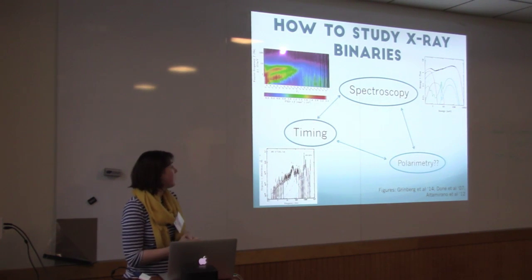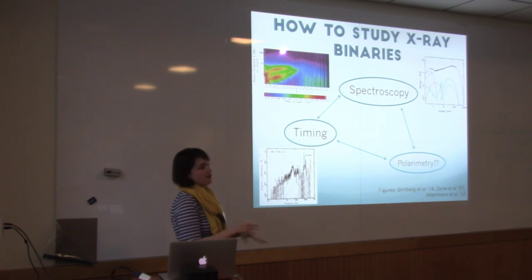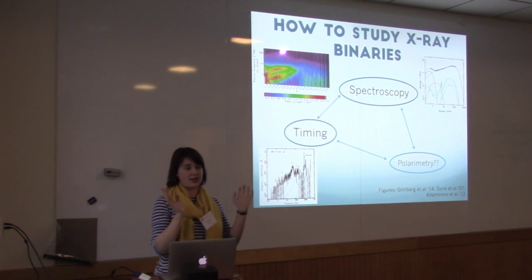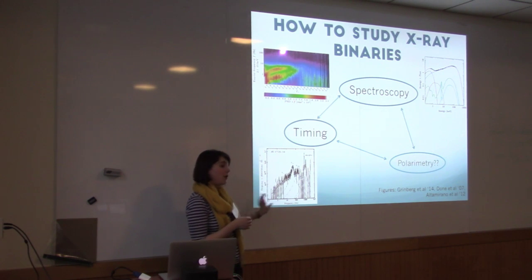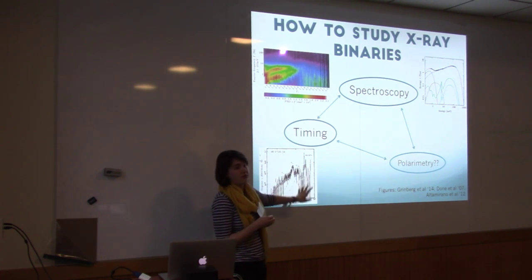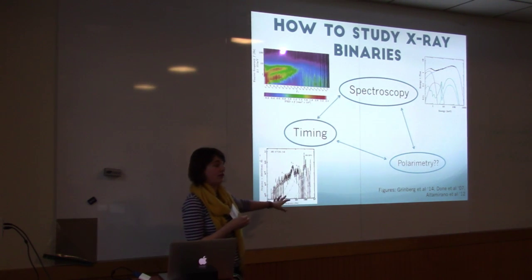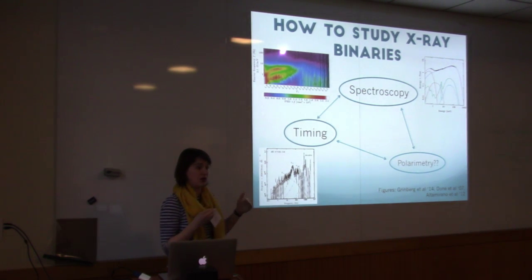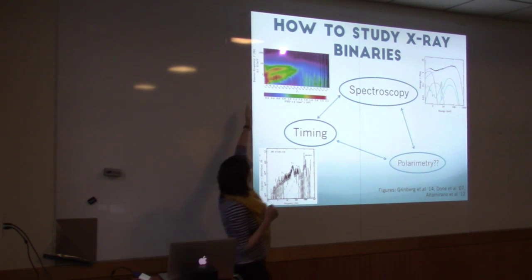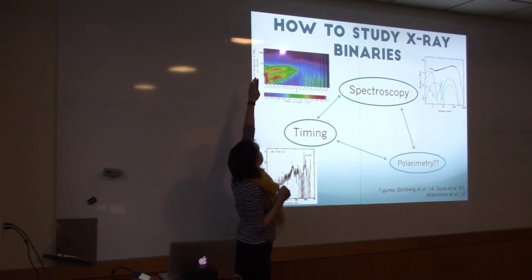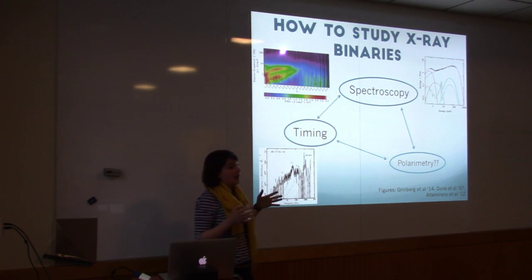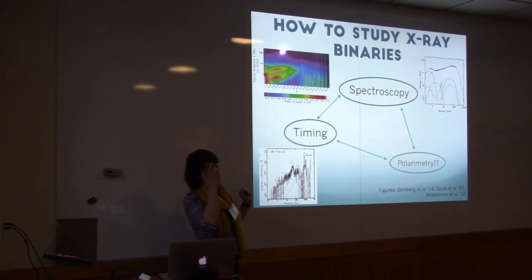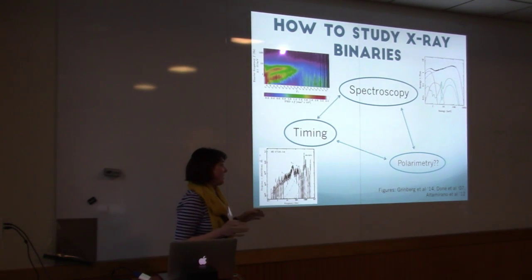The two dominant ways we study X-ray binaries are spectroscopy and timing. With spectroscopy we have energy spectra and fit different models to try to figure out what's happening. With timing, we have a power spectrum showing the frequency at which we see variability, and we try to fit things to it. We've also been developing spectral timing — fast time-resolution spectroscopy with energy spectra along one axis and time along another. On the horizon is polarimetry; there's the prospect of an X-ray polarimeter launched in the next five to ten years, which could add a third leg to this analysis diagram.